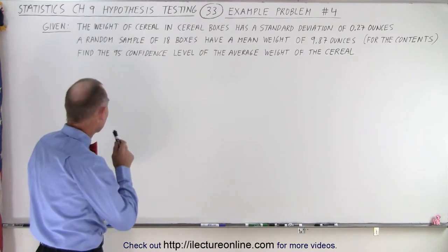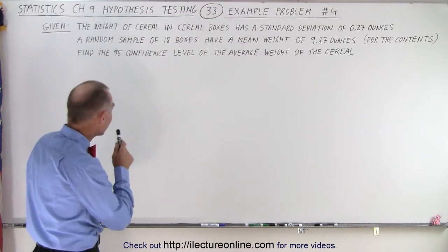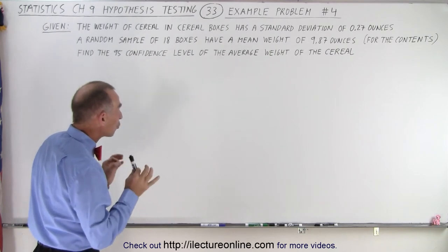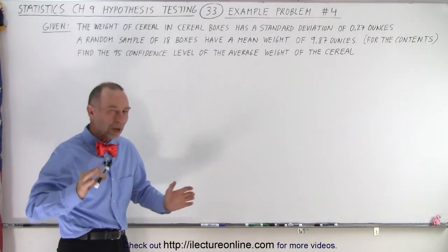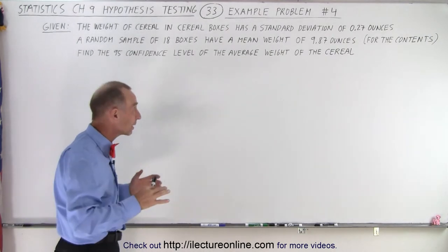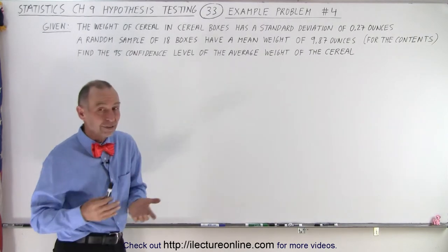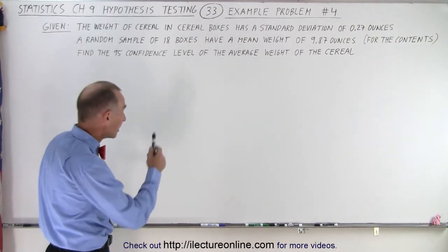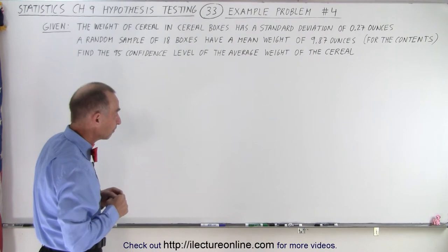A random sample of 18 boxes have a mean weight of 9.87 ounces for the contents — not for the box, but for the cereal. They ask us to find the 95% confidence level of the average weight of the cereal. What is the range of the weight we can expect in the cereal boxes based upon that random sample of 18 with that result?